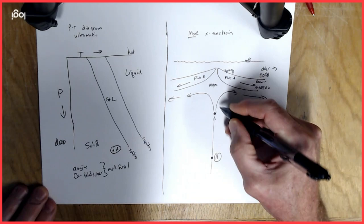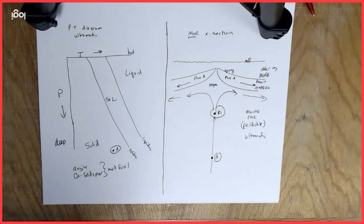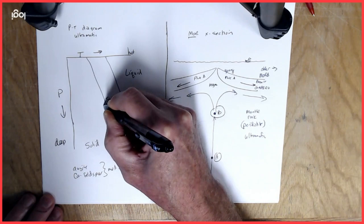So as that material rises, say to about half of its depth here at point B, it's going to lose half of its pressure, but it's still going to be really hot. It might cool ever so slightly. So point B might be right about here.